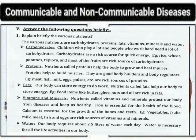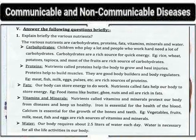Vitamins and Minerals: Nutrients called vitamins and minerals protect our body from disease and keep us healthy. Iron is essential for the health of the blood. Calcium is essential for the growth of bones and teeth. Examples include vegetables, fruits, milk, meat, and eggs, which are rich sources of vitamins and minerals.